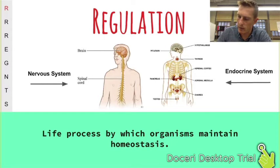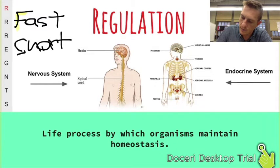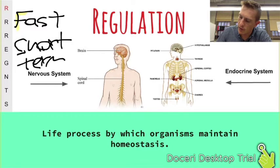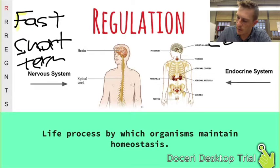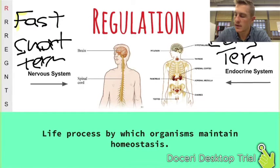The nervous system, made up of your brain and spinal cord, responds very quickly and has short-term effects. The endocrine system responds more slowly because it deals with glands and hormones, but the effects are more intense and longer-term. We'll discuss the differences between these two at a later date, but regulation is the process by which organisms maintain homeostasis, accomplished by these two systems.